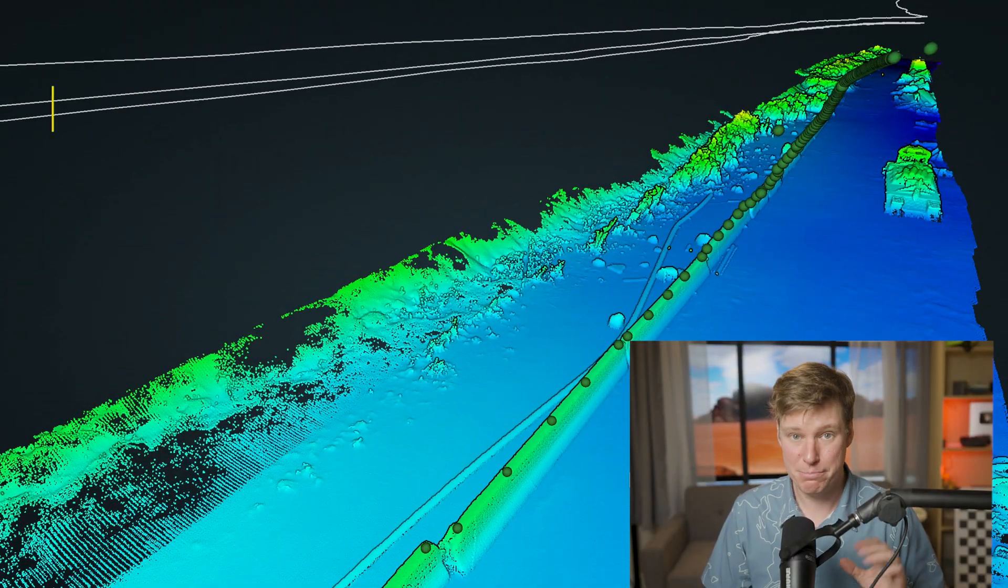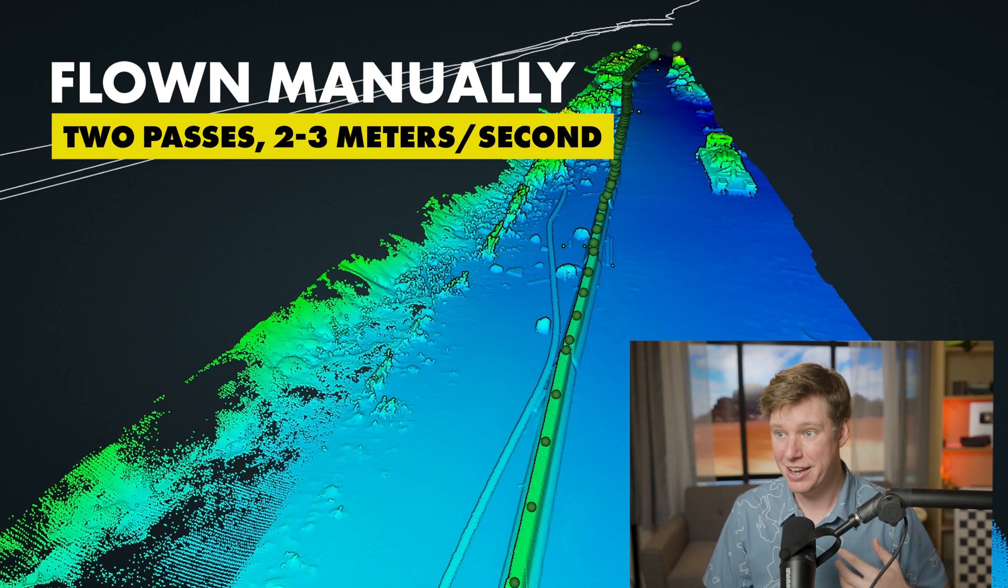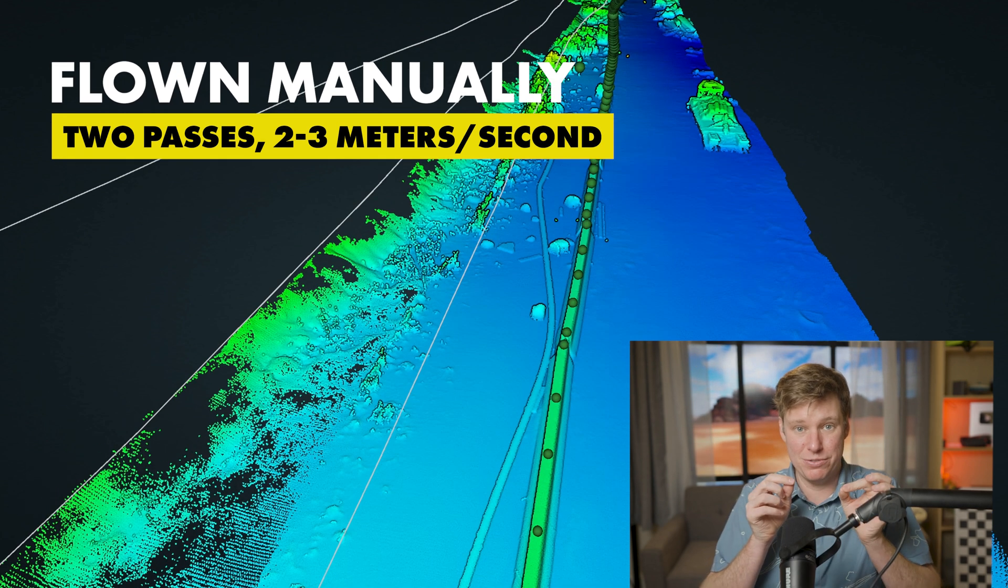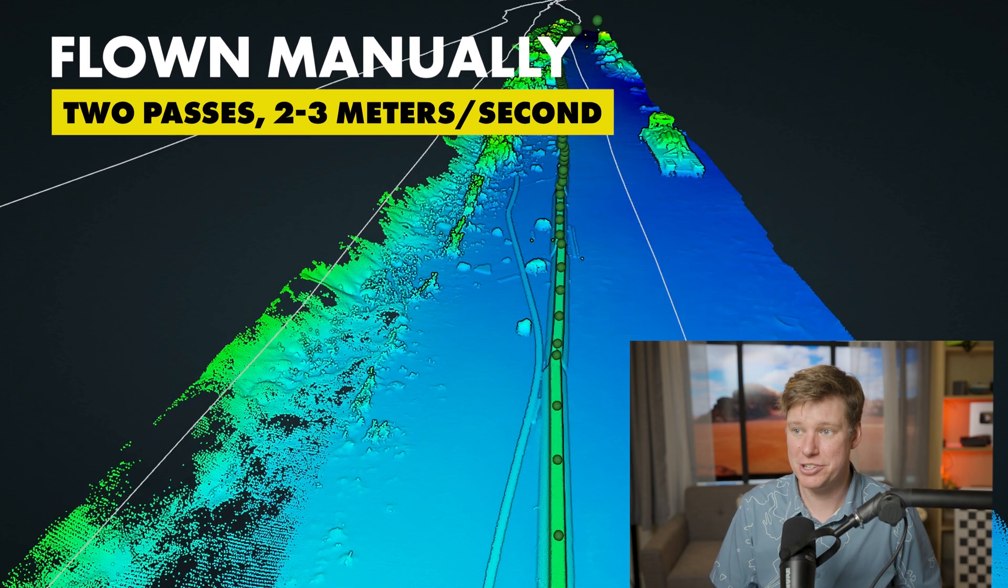The mission is flown manually, full manual, down back, down back, two passes, two down, two back. It was done manually at about two to three meters per second going forward, just as well as you can do it.